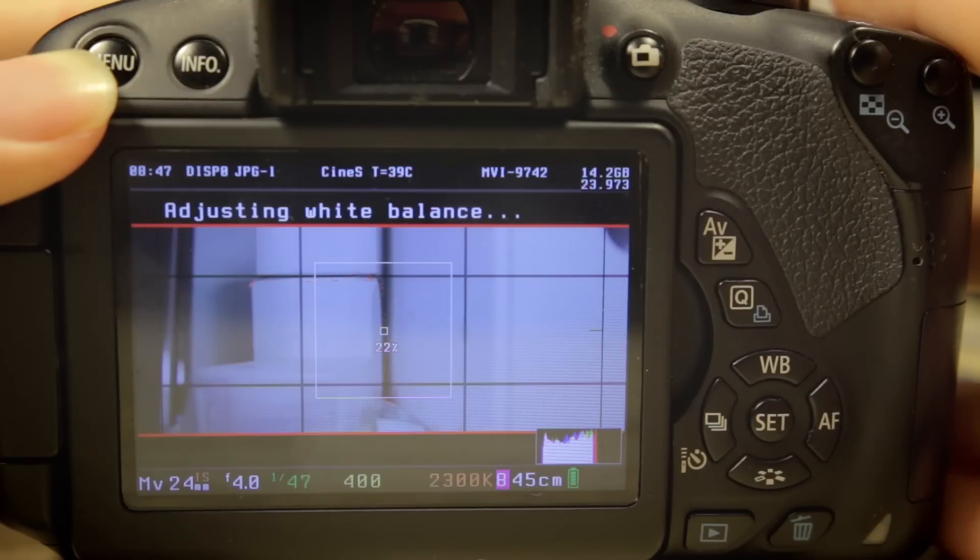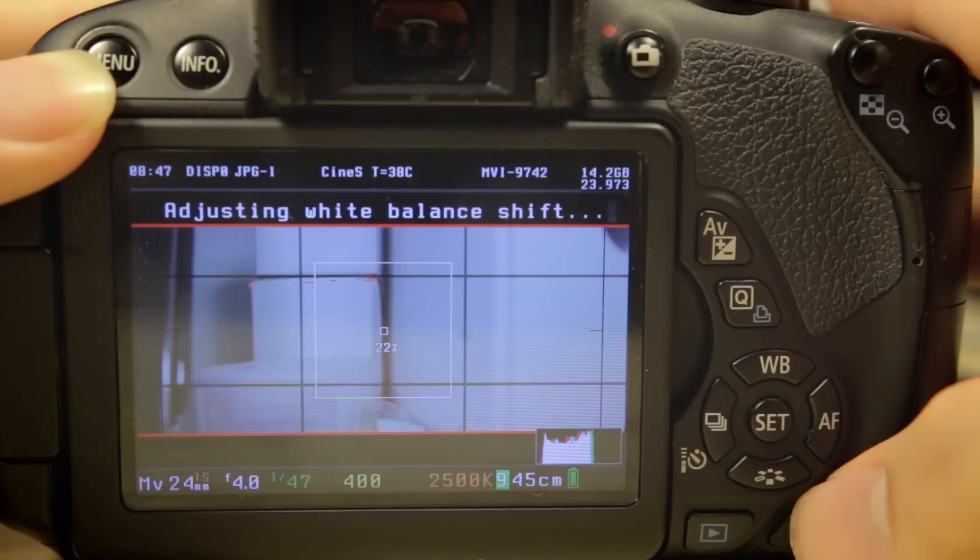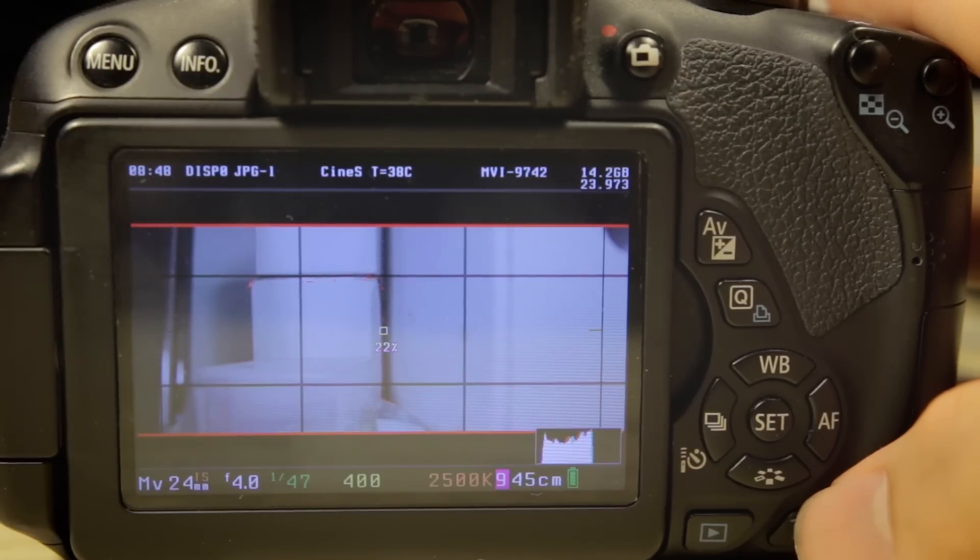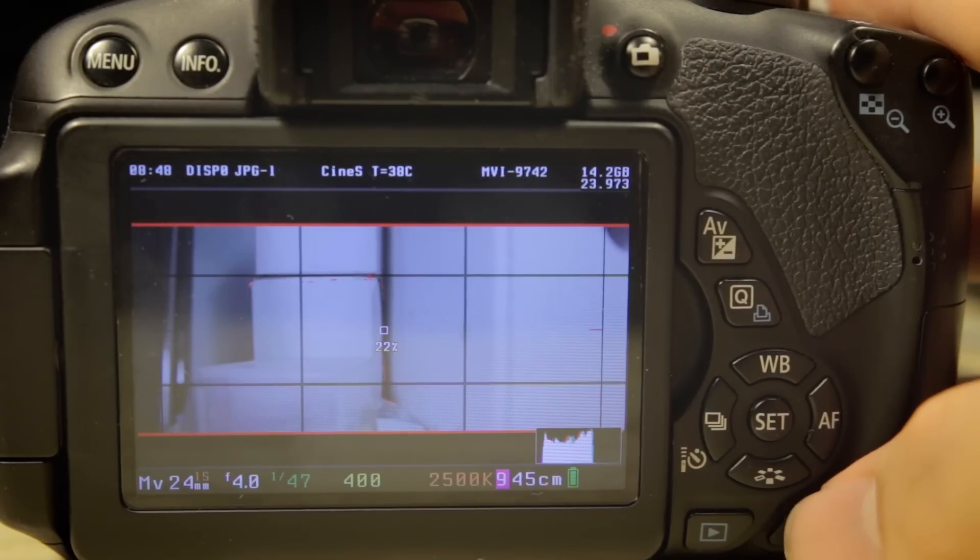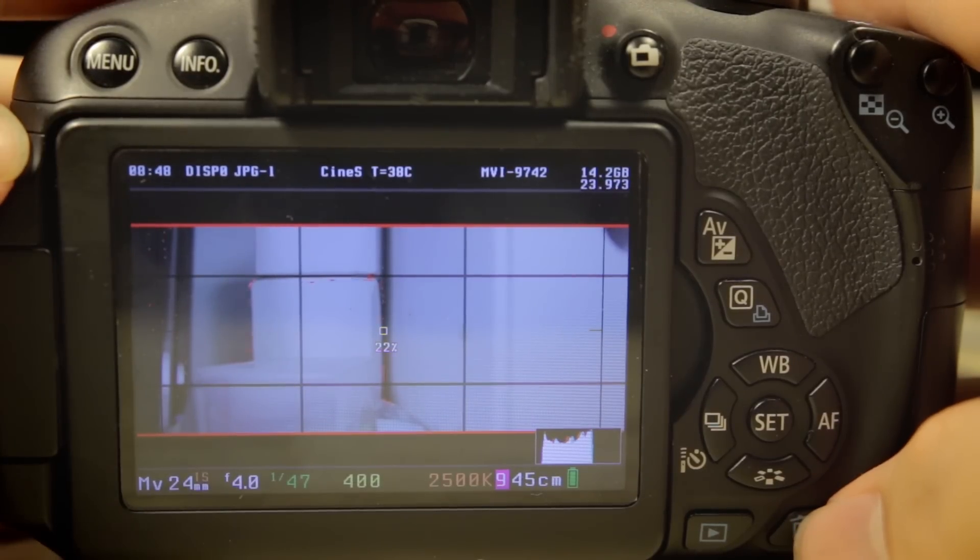Once you've done that, Magic Lantern will automatically meter your scene based on the current white balance and adjust the white balance for you automatically. It's like automatic Custom White Balance, which can save you a lot of time and trouble. So that is a very neat feature to have.